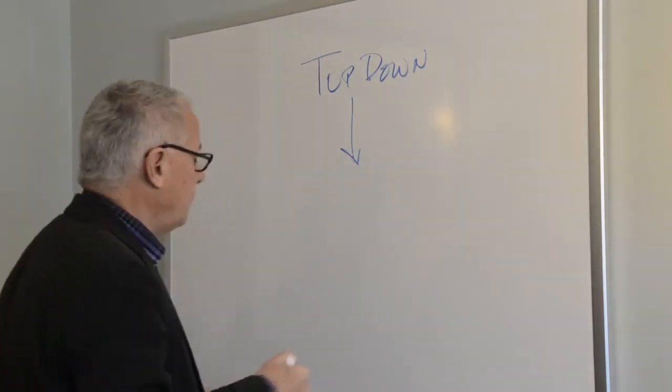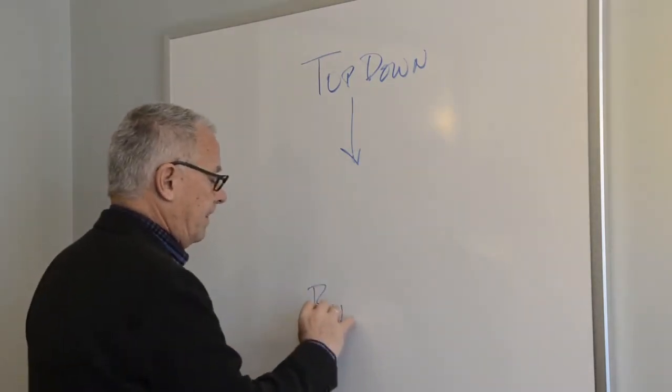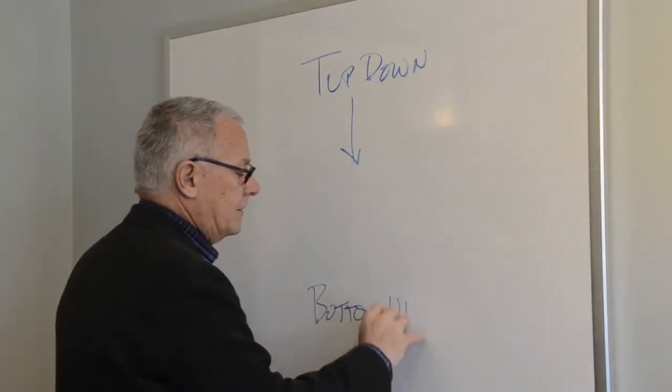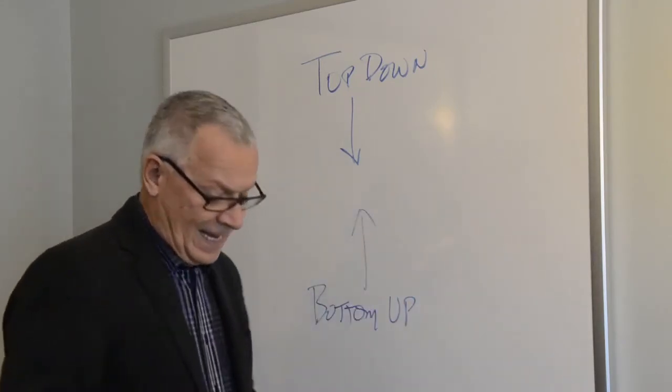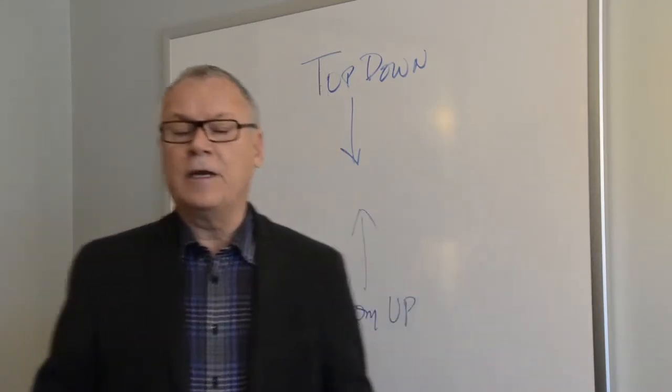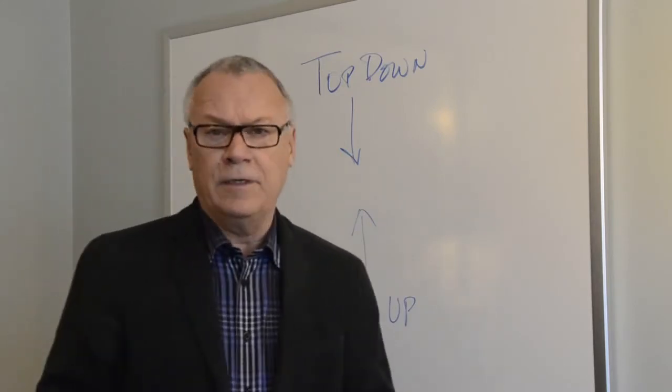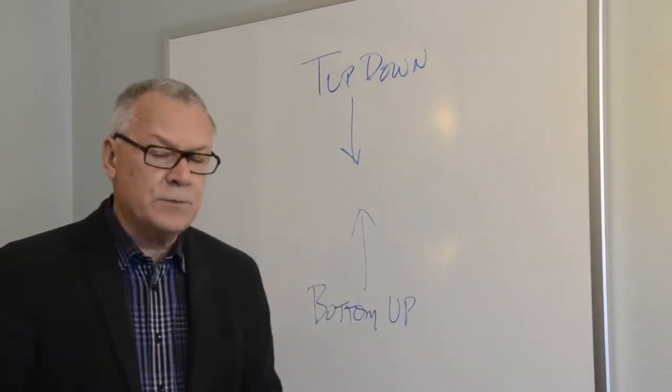Another is to do what's called bottom-up. This is far more work, and it's very necessary if you haven't got a history of accounting for your electoral events and what their costs were.